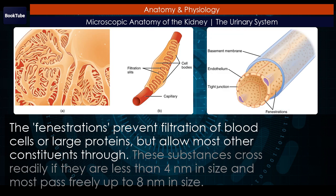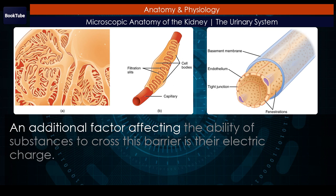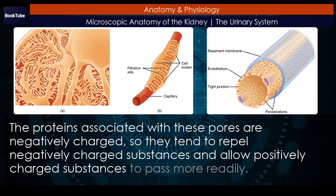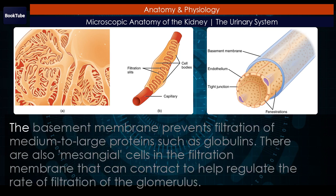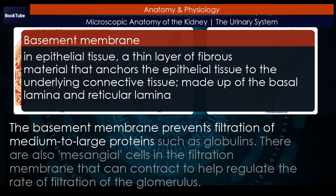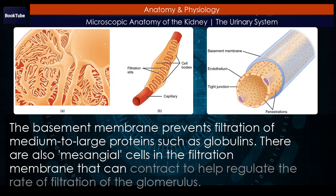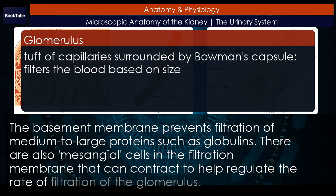But allow most other constituents through. These substances cross readily if they are less than 4 nanometers in size, and most pass freely up to 8 nanometers in size. An additional factor affecting the ability of substances to cross this barrier is their electric charge. The proteins associated with these pores are negatively charged, so they tend to repel negatively charged substances and allow positively charged substances to pass more readily. The basement membrane prevents filtration of medium to large proteins such as globulins.